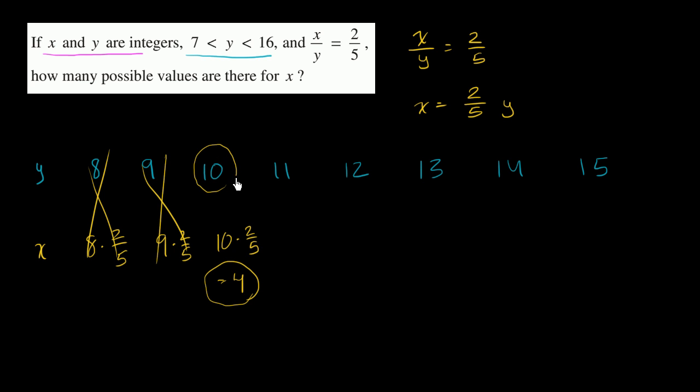And frankly, this is a possible value for y, if we assume that they both have to be integers. And so we don't have to test all of these. We just say, look, which of these are also divisible by 5? Well, 10 is divisible by 5.